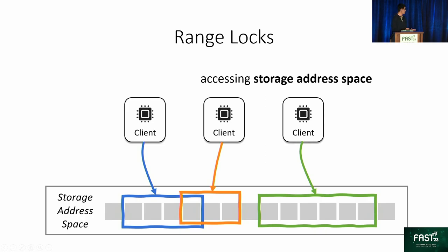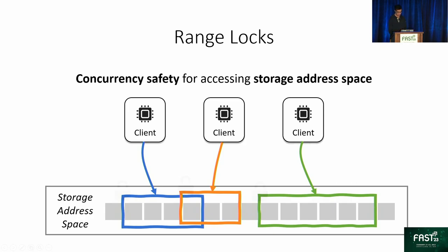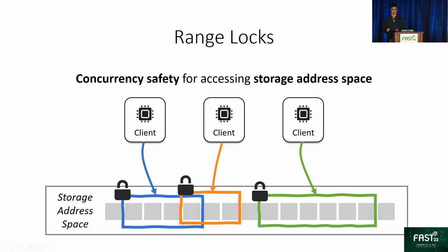For example, the system might need to access data at a certain offset in a file of a certain size to retrieve a key-value record or relational database record. For concurrency safety, we need to ensure that different clients do not simultaneously access overlapping ranges of the same address space.